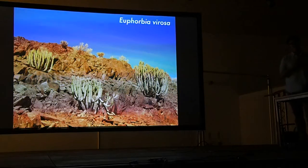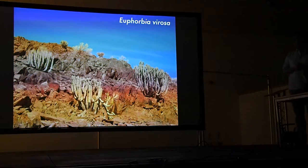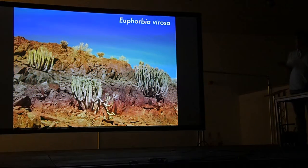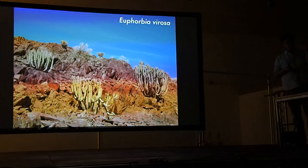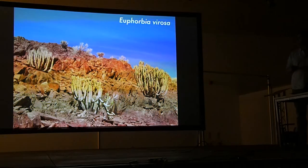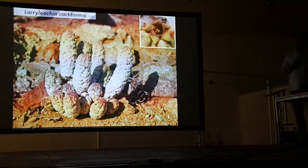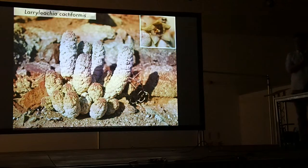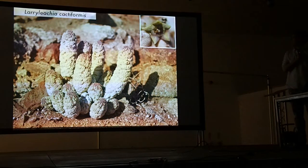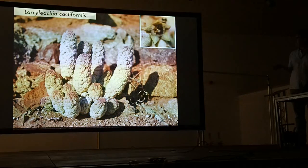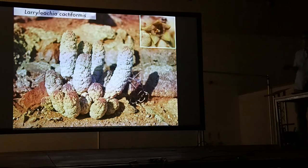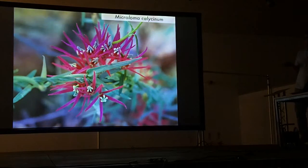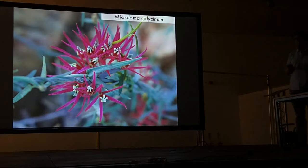Euphorbia barossa is another species endemic to the Richtersveld and is an incredibly poisonous euphorbia species — hence the name. It's used by the native people to poison the tips of arrows. I have a particular interest in Stapeliads. This is Larryleachia cactiformis — it may be hard to love because it's quite knobbly, but I think it's pretty fascinating. It's pollinated by carrion flies.